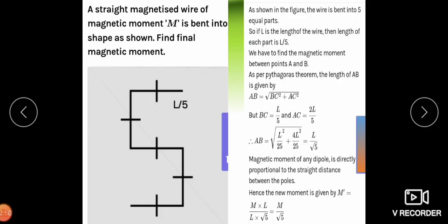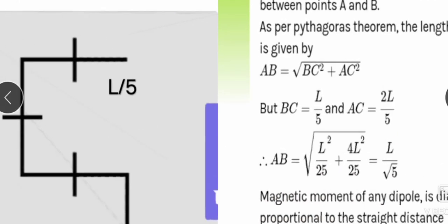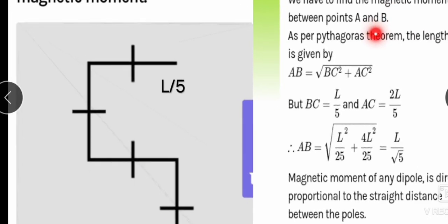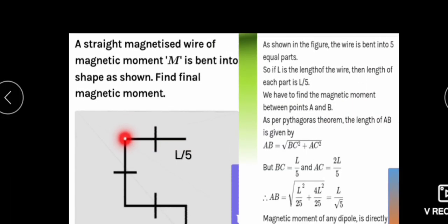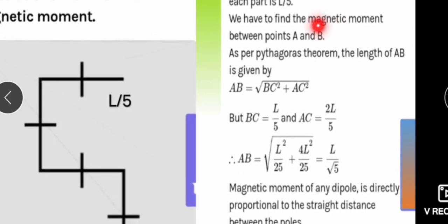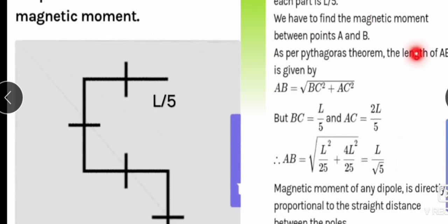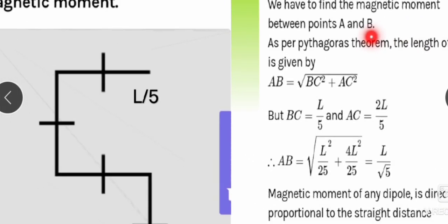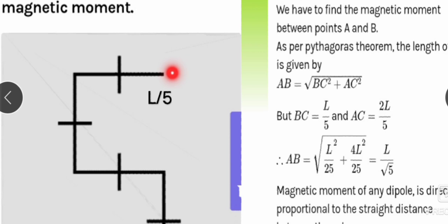Let us take the first example. A straight magnetized wire of magnetic moment M is bent into a shape as shown in the figure. It is bent into 5 parts of equal length. So the length of one part will be L/5. We need to find the final magnetic moment by finding the resultant length between the end points A and B.